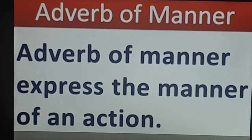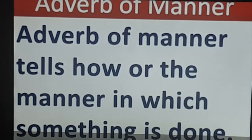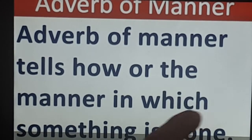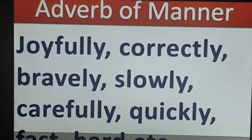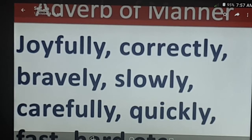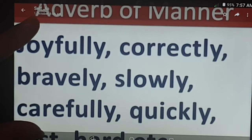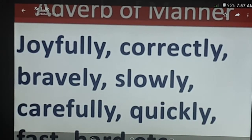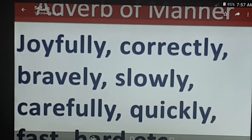Adverb of manner tells us how an action is done, or expresses the manner of an action. Examples: 'joyfully' — how did she dance? She danced joyfully. 'Correctly' — how did she do the sum? She did it correctly. 'Bravely' — how did they fight? They fought bravely. So all these words tell us how the actions are done: slowly, carefully, quickly, fast, hard.